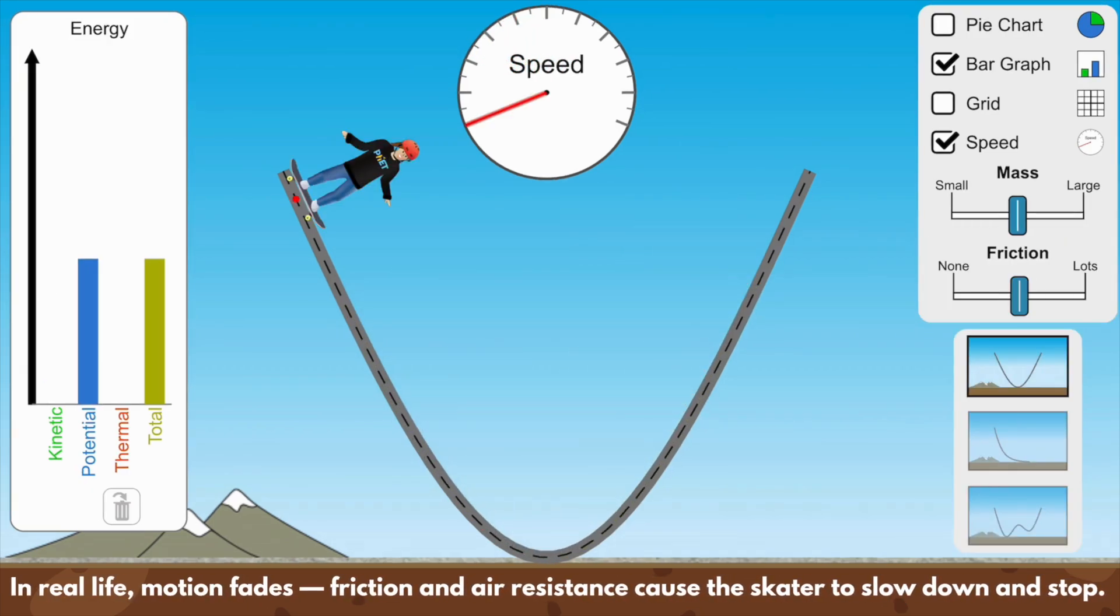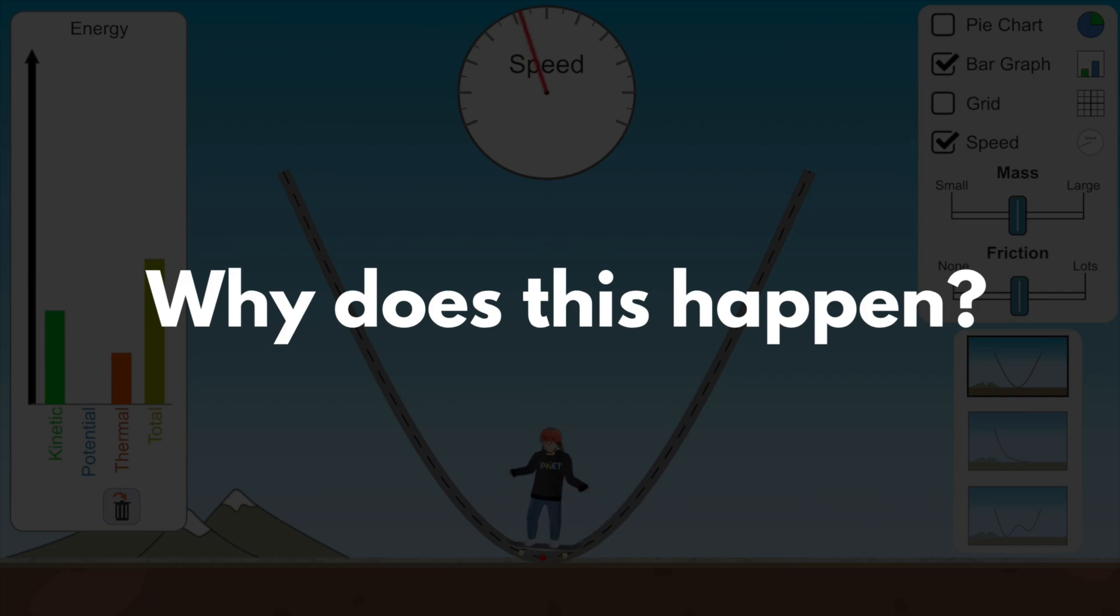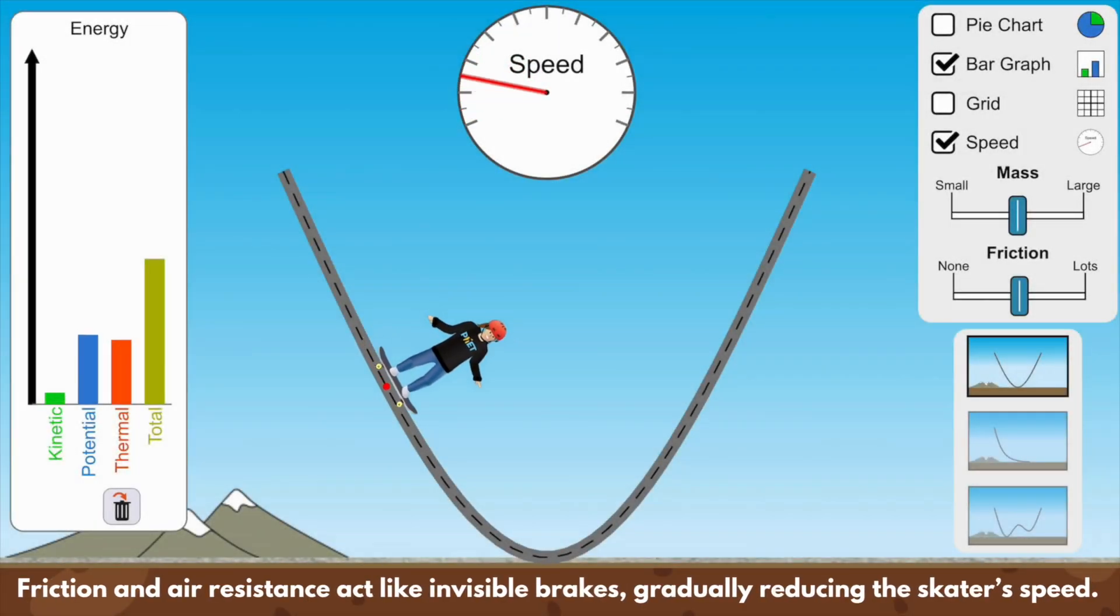But in real life motion doesn't last forever. Over time the skater slows down and eventually stops. Why does this happen? That's because of friction and air resistance which act like brakes. These forces convert some of the mechanical energy into heat, slowly draining energy from the system.